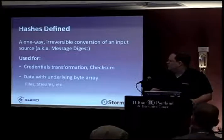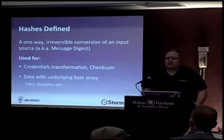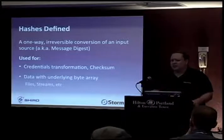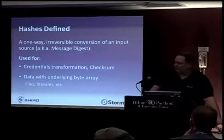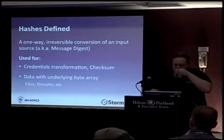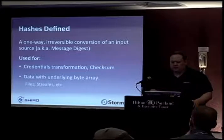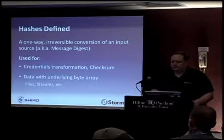A hash is a one-way irreversible conversion of an input source, also known as a message digest. It's most commonly used for credentials transformation — if you have a password and want to change it to a format people can't understand or reverse, you use a hash. It's also used like MD5 to create checksums for files, so you can see if a file's been manipulated in transit. Shiro can hash anything with an underlying byte array — files, streams — and we'll show you an example of that API shortly.